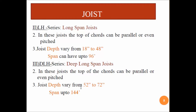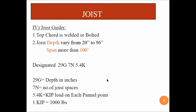The fourth type is the Joist Girder. The chord can be welded or bolted. Depth varies from 20 inches to 96 inches and span can be more than 100 feet. The designation example is '29G7N5.4K' — where 29G stands for depth in inches, 7N stands for number of joist spaces, and 5.4K stands for kip load on each panel point. One kip is equal to 1,000 lbs.